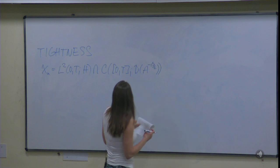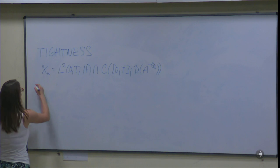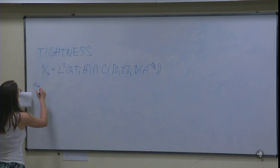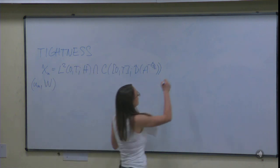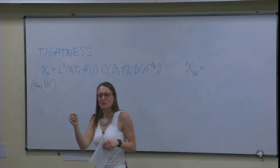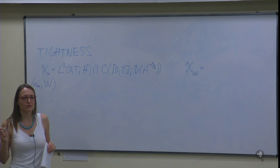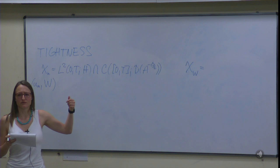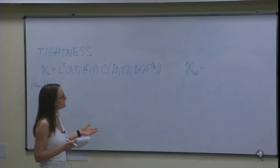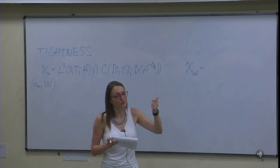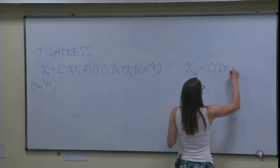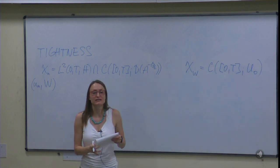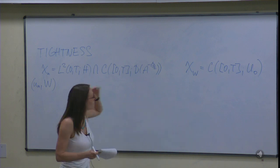I will prove tightness not only of the approximate Galerkin solutions but also jointly with the Brownian motion. I want to prove tightness of the joint laws. For the Brownian motion, recall that W was a cylindrical Wiener process. The sum only converged formally in U, not in the space U itself, so we introduced the space U₀, where W has continuous trajectories. That was the only reason I told you about that space, and we will use it here.